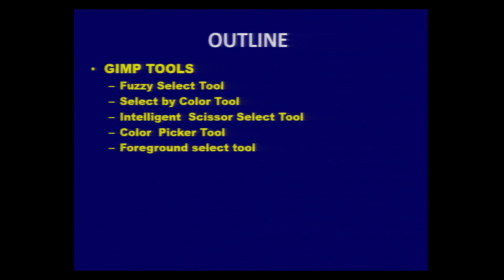Welcome to the MOOCs module on graphics and animation development. In this video session, we will see how different game tools for selection will be utilized for effectively selecting an image or object in the current window. The tools we are going to focus on in this session are fuzzy select tool, select by color tool, intelligent scissor select tool, color picker tool, and foreground select tool.